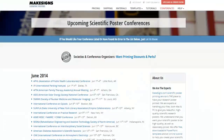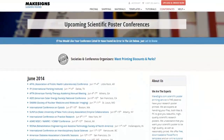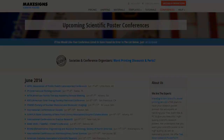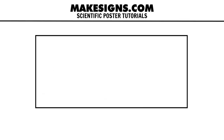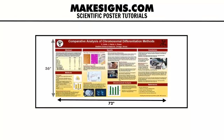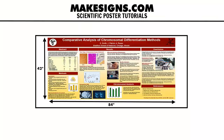Chances are your conference will give you some guidance on what size posters they want you to present. The most popular poster board size tends to be 48 inches high by 96 inches wide, which is 4 feet high by 8 feet wide. Of course, that's huge, and that's the board size — the thing you tack your poster onto. Your actual poster size itself shouldn't necessarily be as big as the entire board. For a 48 by 96 inch board, we often see posters printed at 36 by 72 inches or 42 by 84 inches, both of which would look nice on a 48 by 96 board.